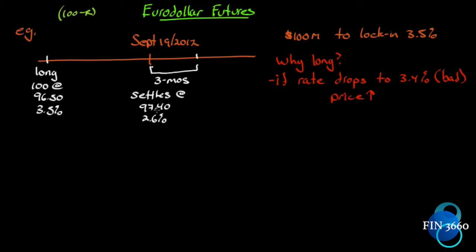Let's say it settles on September 19th at 97.40, which implies an interest rate of 2.6%. We want to see: did this contract in fact lock in an interest rate of 3.5% for this three-month period? Why are we going long? If rates drop to 3.4%, that is bad for the long position because the long position is making the deposit — they would get less interest. So they want to be compensated with a gain on the futures contract. If it drops to 3.4%, the price goes from 96.50 to 96.60 — there's the gain. Here's what they entered into at 96.50, here's what it settled at.